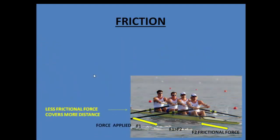Now consider four people trying to row the boat. Collectively these four people apply a force F1. The frictional force acting in the opposite direction is F2. Because four people are applying a much larger force, the frictional force becomes comparatively less effective. So these four people will be able to cover a much larger distance compared to when there was only one person moving the boat.